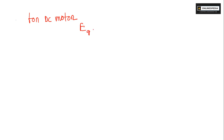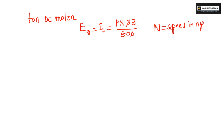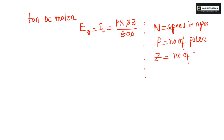For DC motors in general, the generated EMF or back EMF is equal to (P · phi · N · Z) divided by 60A, where N is your speed in RPM, P is your number of poles, Z is your number of conductors, and A is your number of parallel paths. These formulas are necessary to derive why DC series motor can operate on AC but shunt motor cannot.